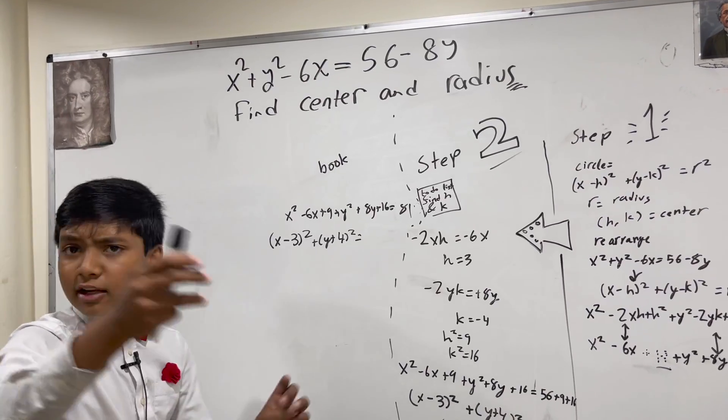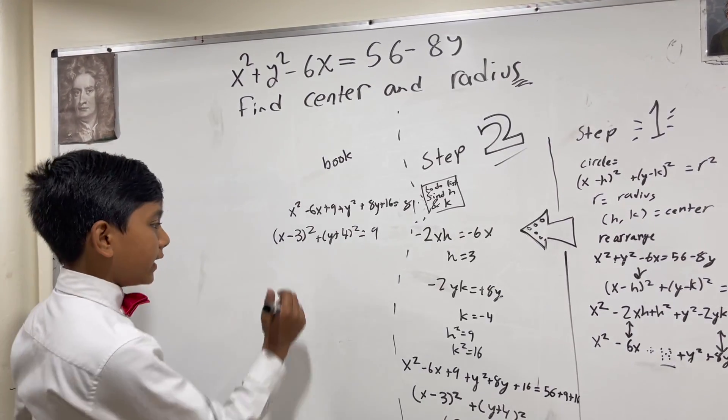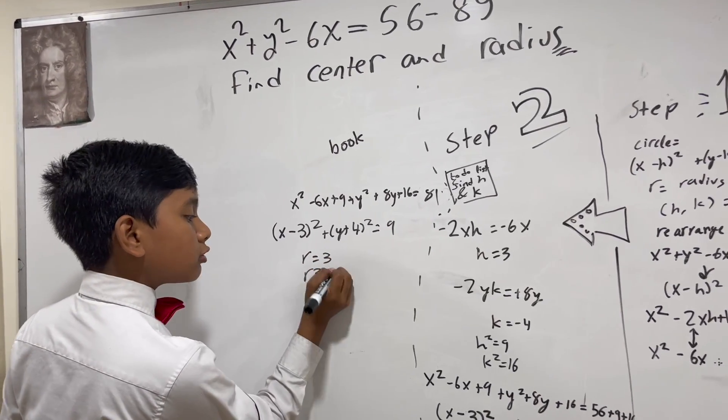And, then, suddenly, that 81 becomes 9. No squared, just 9. And, then, they say R equals 3 because R squared is 9.